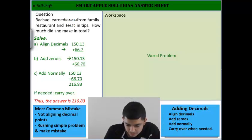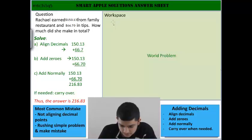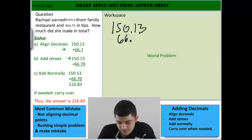So let's start off by writing them out. So $150.13, and then $66.70, and then we're going to add the zero, so then we can add them like normal.